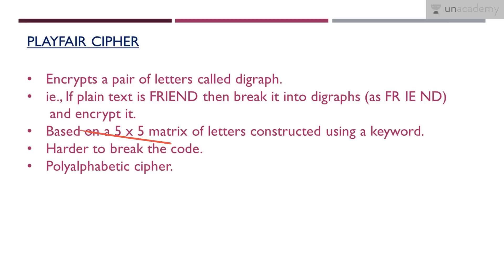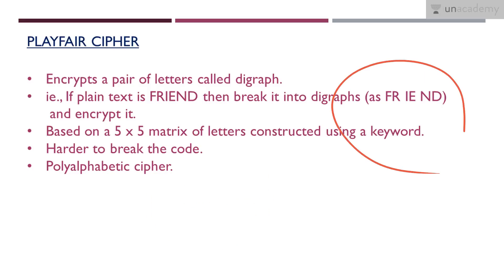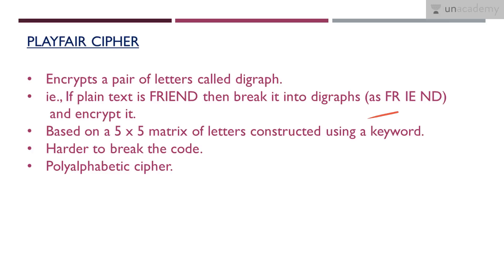This is based on a 5x5 matrix and we will have a keyword. The keyword will be kept private and secure, and will only be shared between the sender and the receiver or the authorized parties — thus it is secure. When we talk about security, it is much more secure than the Caesar cipher; it is harder to break the code. In Caesar cipher the number of possible keys was limited, so an attacker could easily do cryptanalysis or brute force attack. But here there will be a large number of possible digraphs.